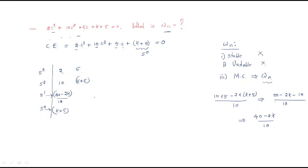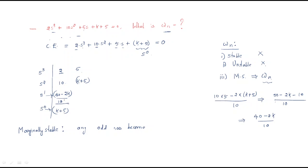Since ωₙ is asked directly, this means it is a marginally stable system. In a marginally stable system, any entire row of the Routh array becomes zero. Here the odd row — the s¹ row — can become zero, so we will set that row equal to zero to find the condition.